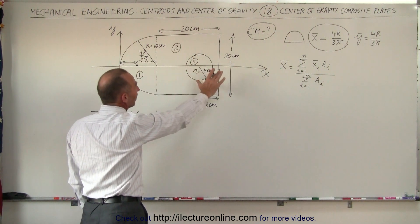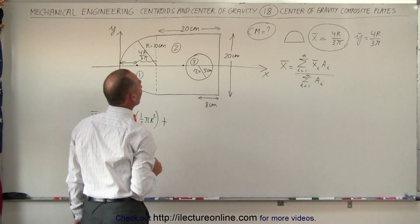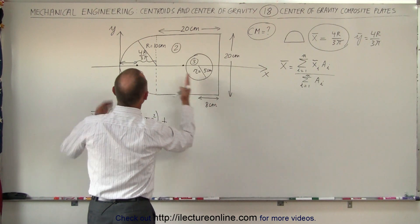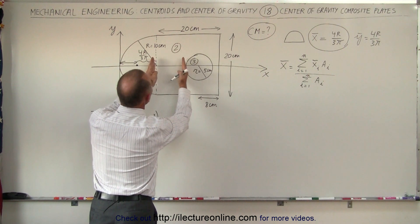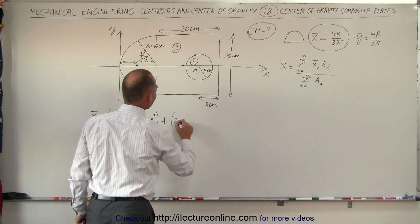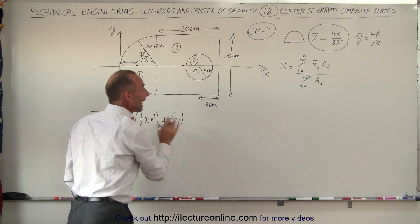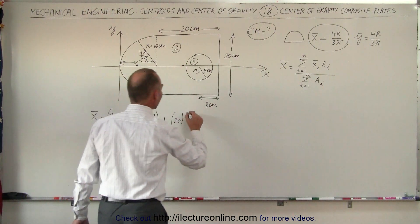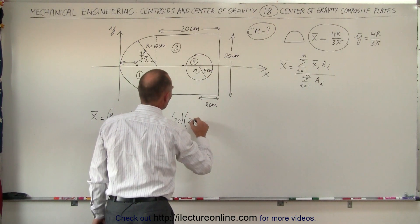Next, we add the rectangle, ignoring the hole for now. The center of mass of the rectangle would be at its very center. We know this side is 10 centimeters, and another 10 centimeters puts you at the halfway point, placing it at 20 centimeters from the origin. That is the x-coordinate of the center of mass of the rectangle, times the area of the rectangle, which is 20 times 20.